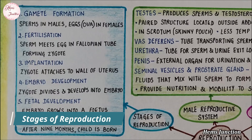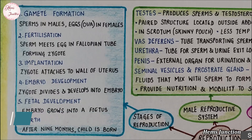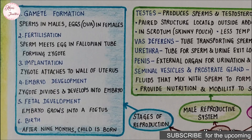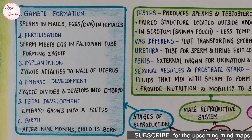Let's look into the stages of reproduction. The first is gamete formation, then fertilization, implantation, embryo development, fetal development, and finally childbirth.